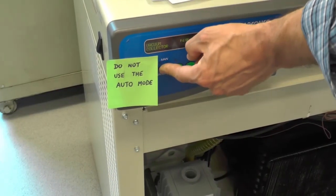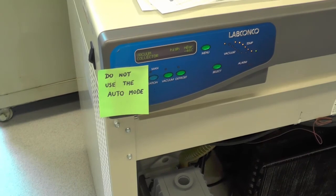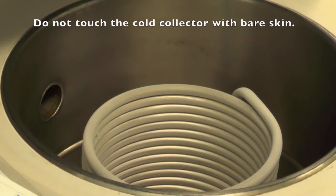To defrost the collector, press on the blue refrigeration button to turn off the refrigeration system. Then open the lid to the water collector and the ice will melt and drain out of the black tube at the bottom. To prevent injuries, do not touch the cold collector with bare skin.